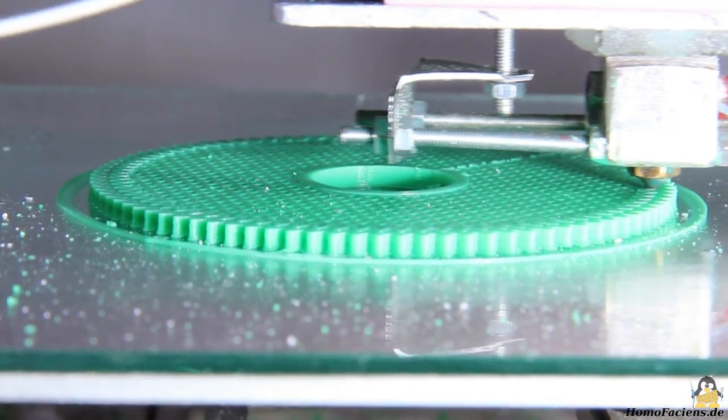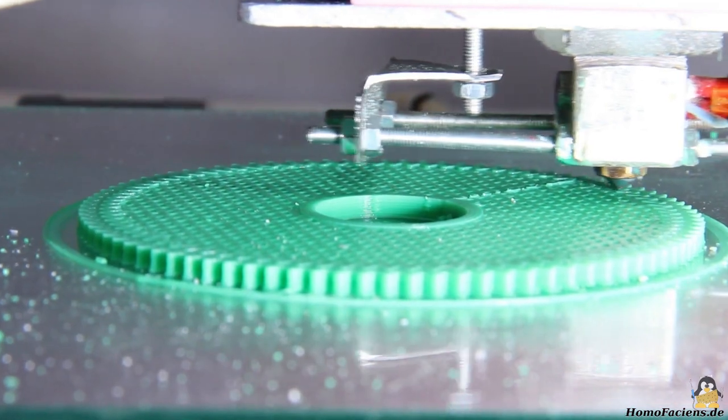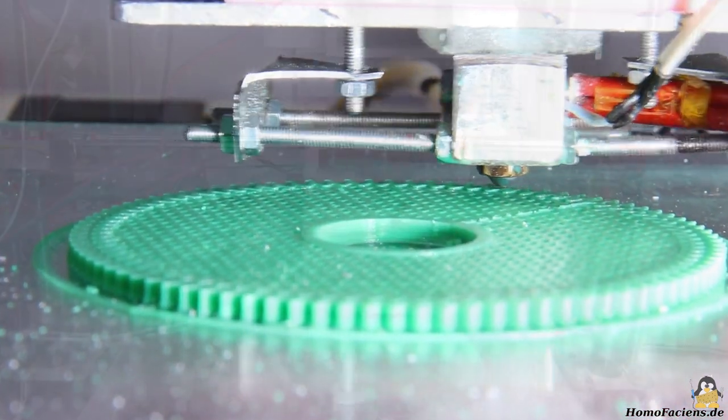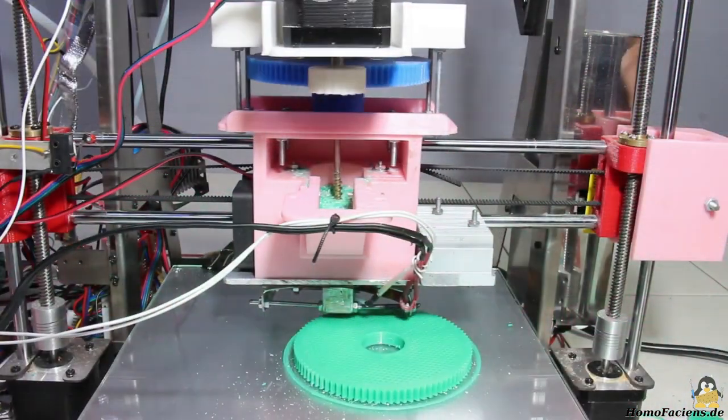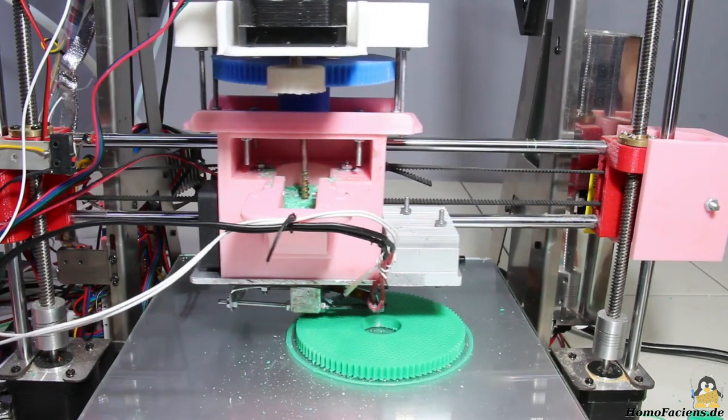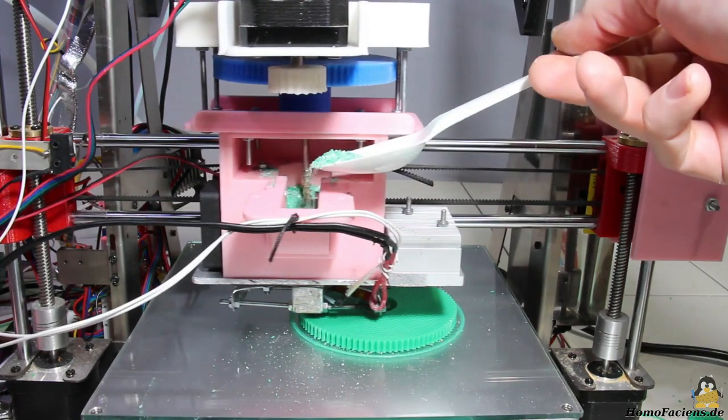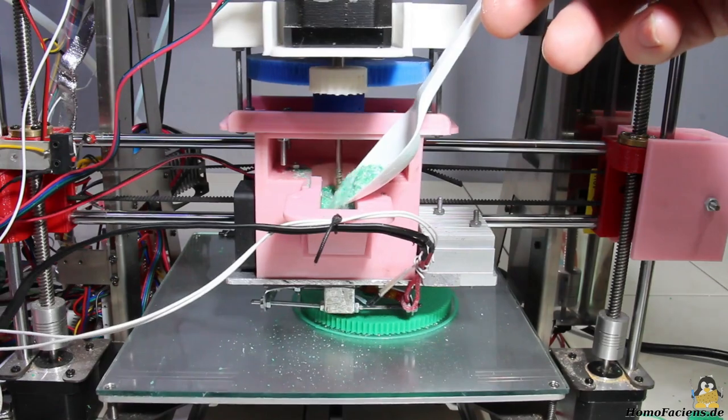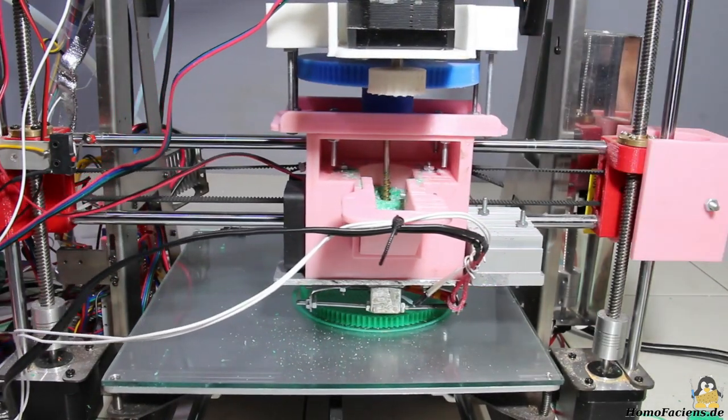The infill is set to 25% with a honeycomb pattern. I had to refill the rather small hopper with raw material about every 20 minutes. An automatic feeder will be implemented in coming versions.